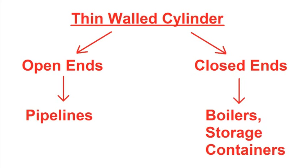Open-ended applies to pipelines, which are restricted from expanding longitudinally. Closed-end applies to isolated pressure vessels, such as boilers and high-pressure storage containers.